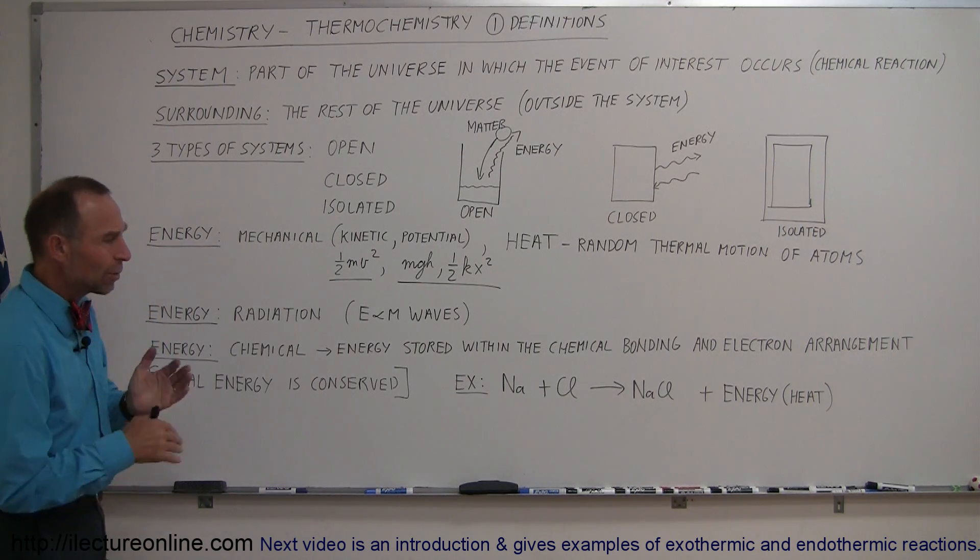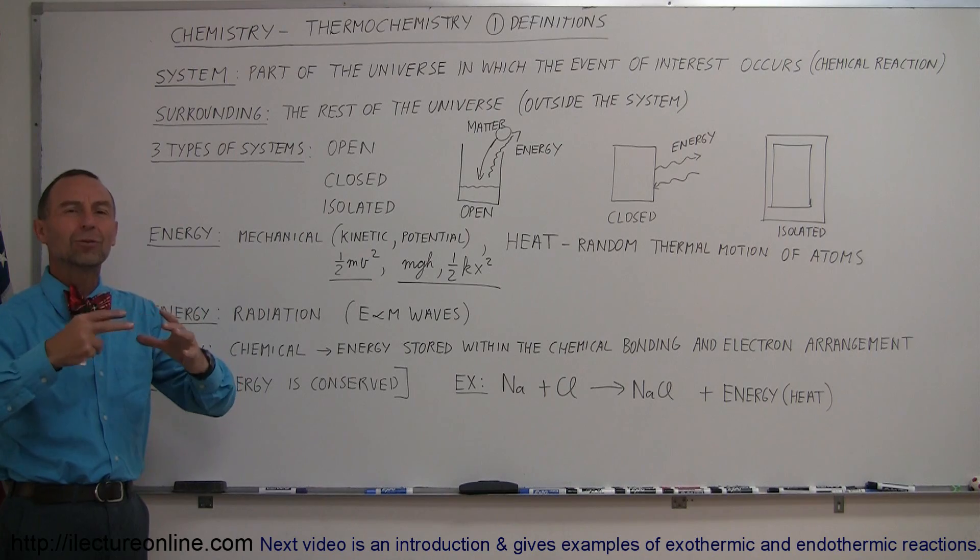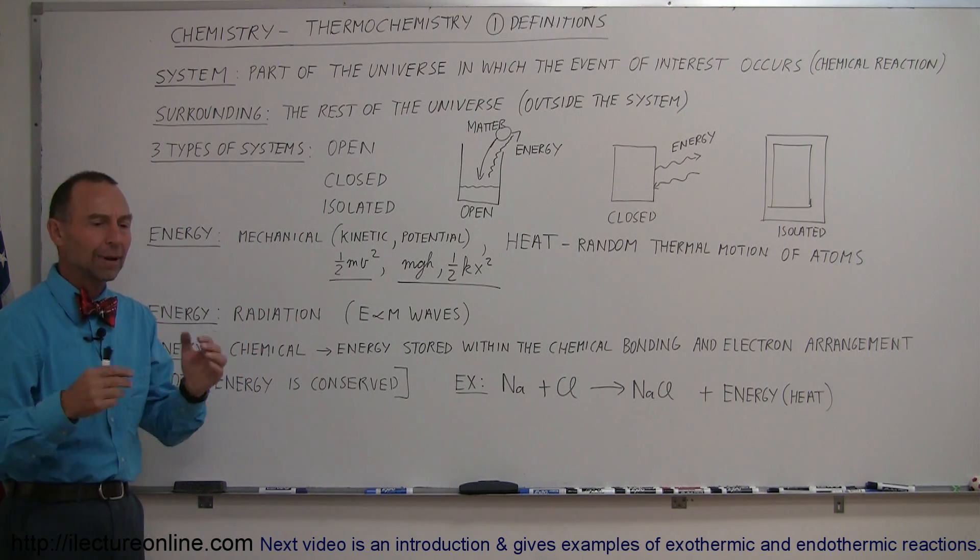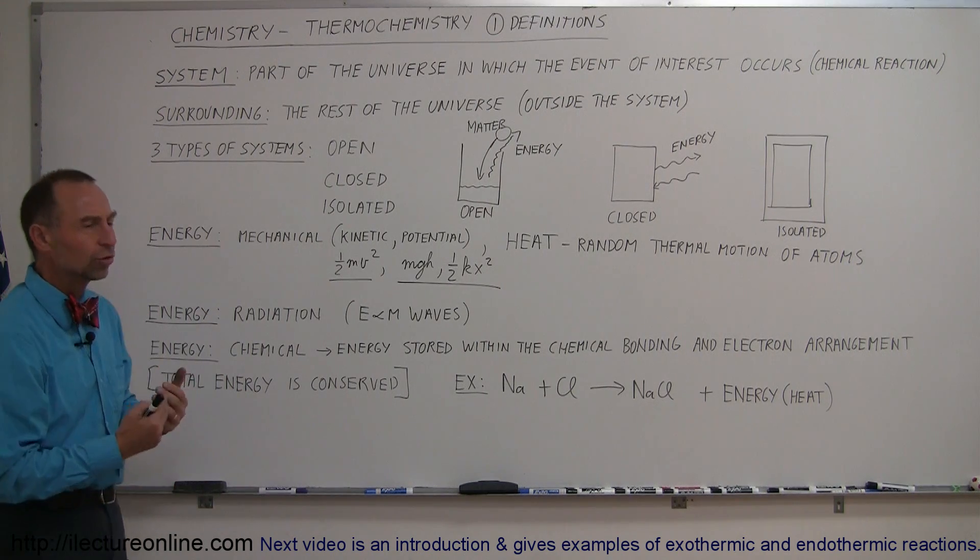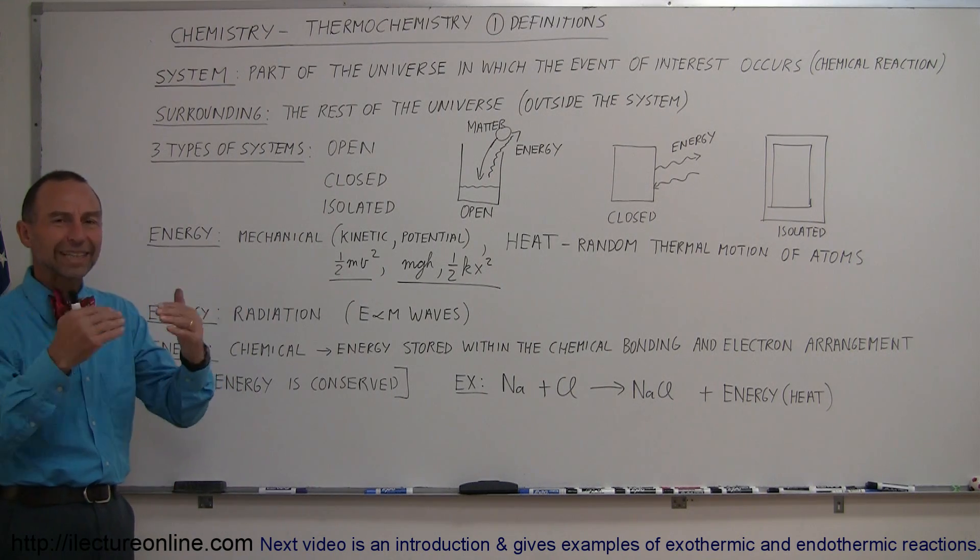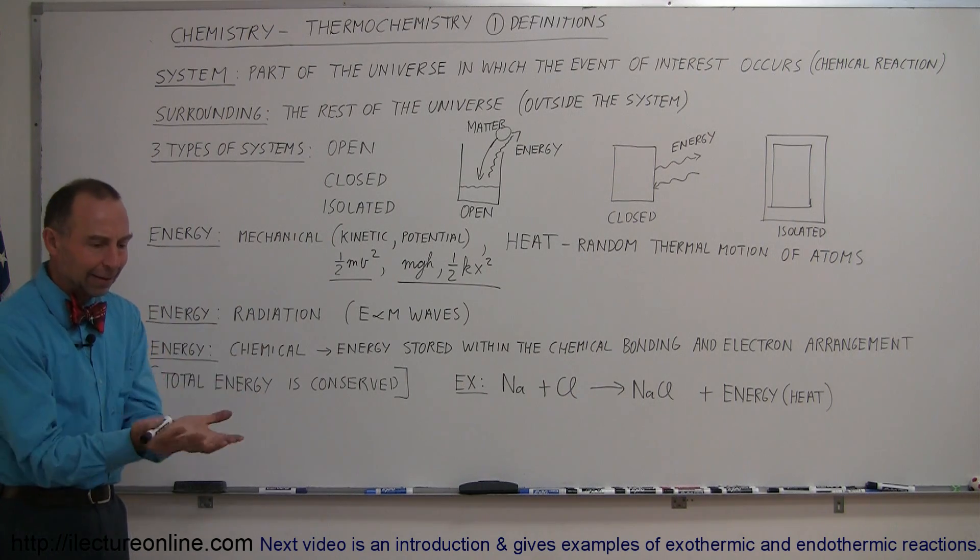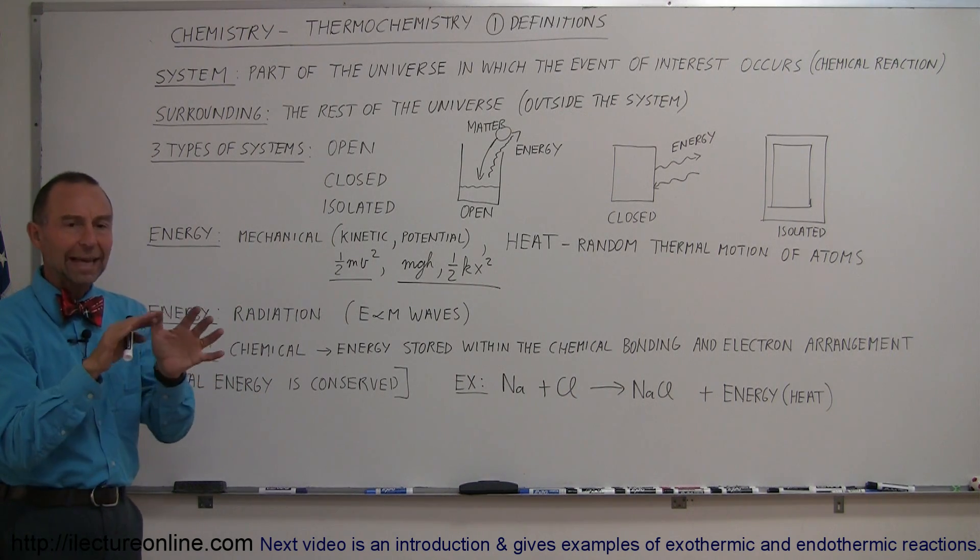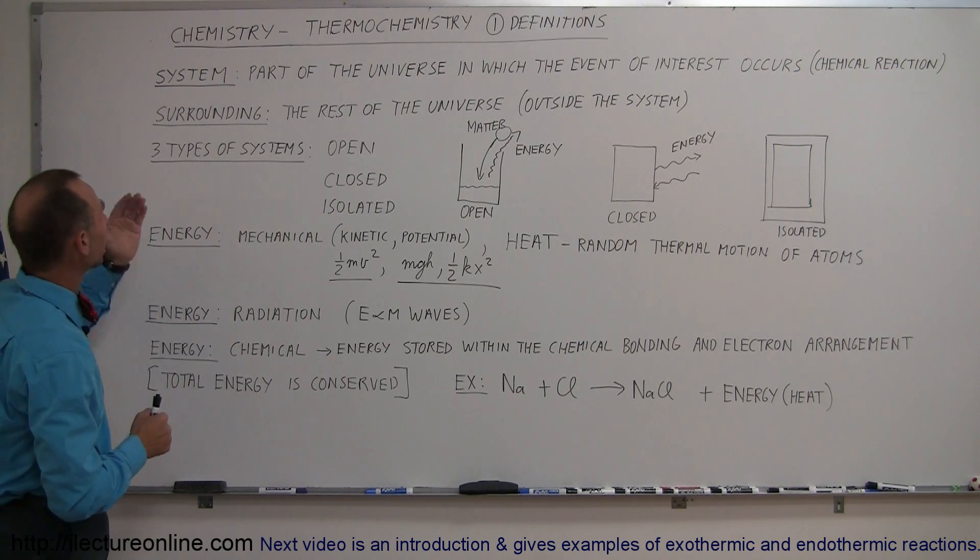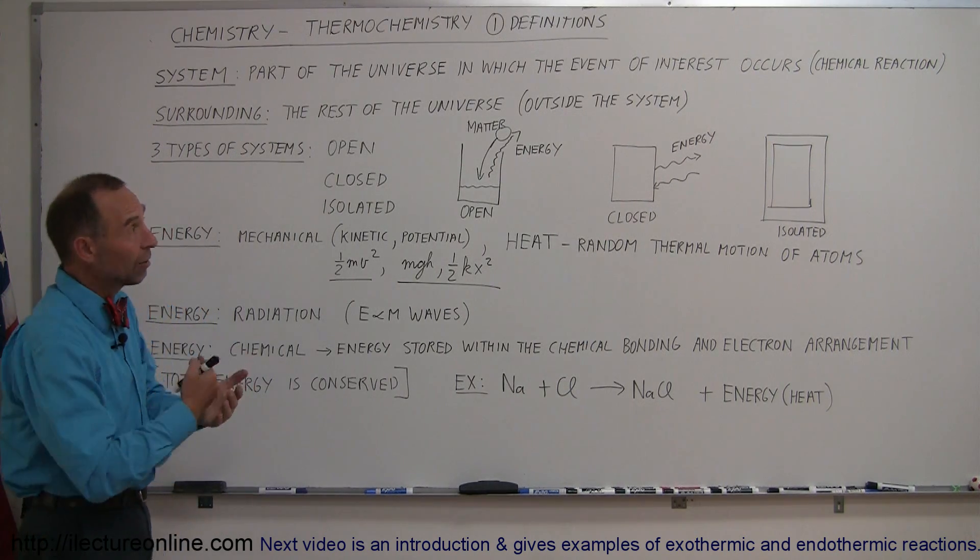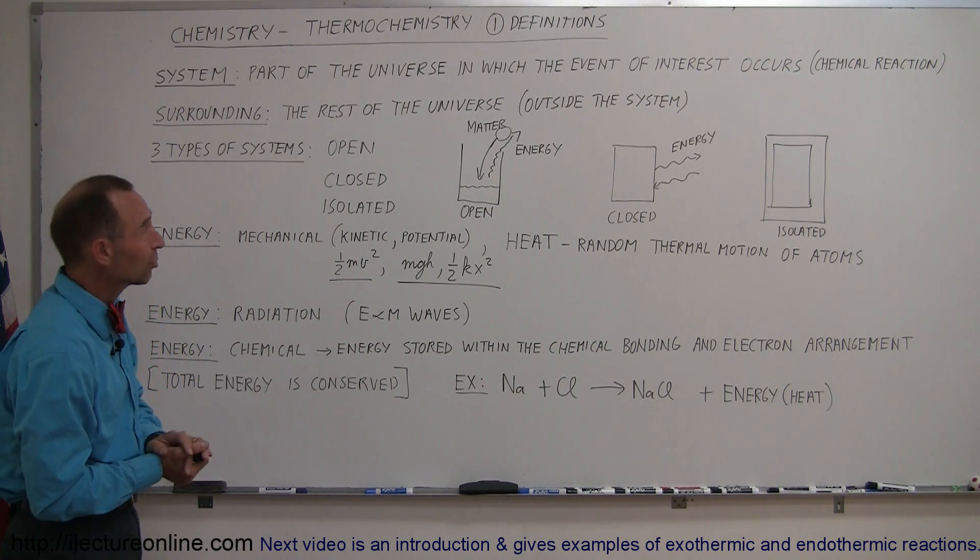First of all, when we deal with chemistry, we usually do things. We combine elements, molecules, solutions, we titrate solutions, we do all kinds of things. There are chemical reactions taking place and so usually that event is a system. We call that a system. By definition, a system is part of the universe in which the event of interest occurs and typically we're talking about a chemical reaction.